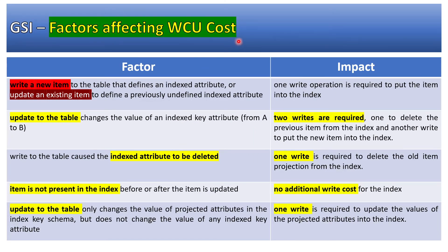The factors affecting WCU cost are: writing a new item that defines an index attribute, or updating an existing item to define a previously undefined indexed attribute — impact is one write operation on the GSI. Updating an item that changes the value of an indexed attribute from A to B requires two writes. Deleting an index attribute requires one write. If an item is not present in the index, there is no additional write cost. You can pause this video and go through all these factors.